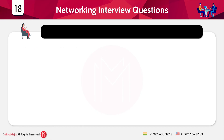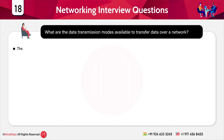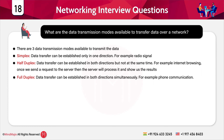The next question is: what are the data transmission modes available to transfer data over a network? There are three types: simplex, half duplex, and full duplex. Simplex allows data transfer only in one direction — for example, radio signals. Half duplex allows data transfer in both directions but not simultaneously — for example, internet browsing, where you send a request and then receive a response. Full duplex allows data transfer in both directions simultaneously — for example, a phone call.